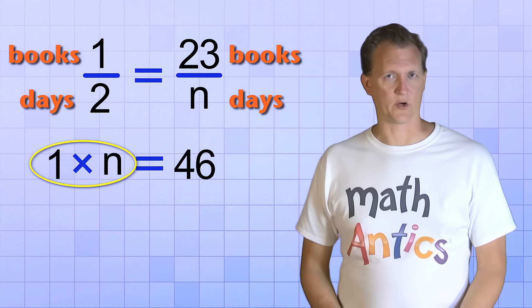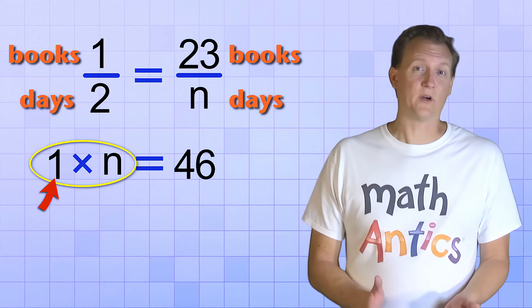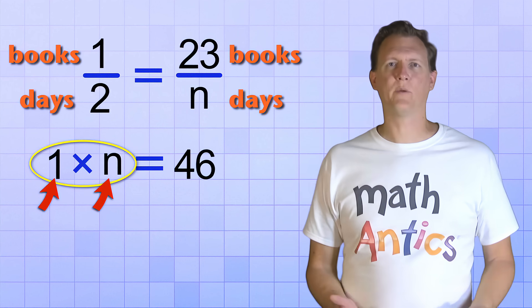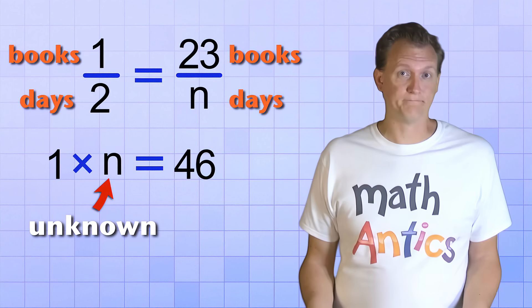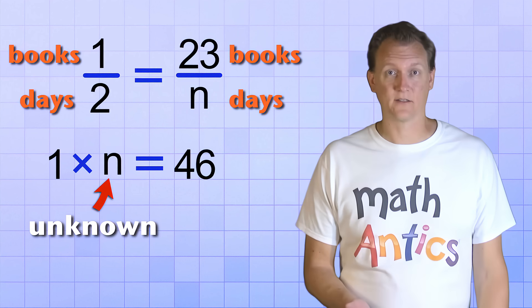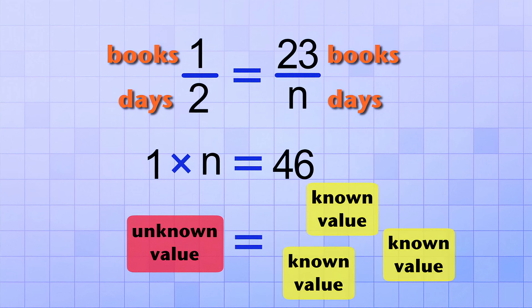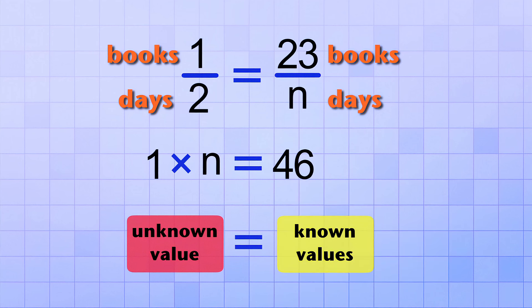But what about the other side of the equation? That has a number being multiplied by our unknown letter N. How can we multiply when one of the numbers is unknown? Actually, we can't! Fortunately, we don't need to because we're just trying to figure out what our unknown number is. What does it equal? In other words, we need to keep rearranging our equation until the unknown value is all by itself on one side of the equal sign, and all the known values have been combined on the other side of the equal sign.